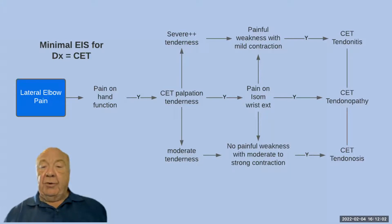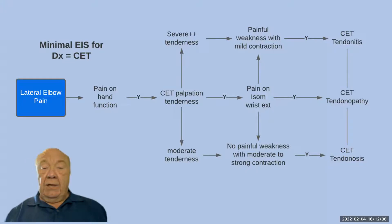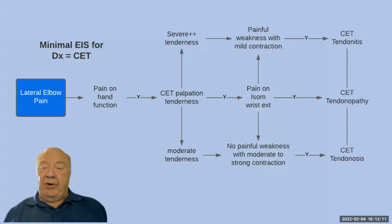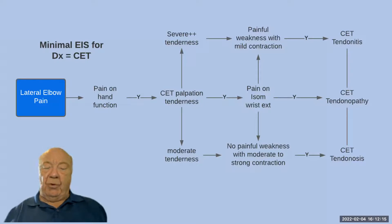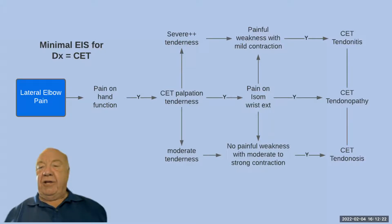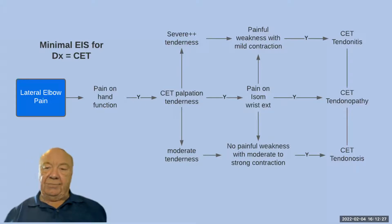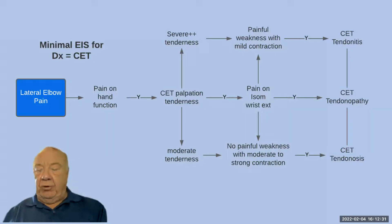If that's positive, then we can palpate the tendon. You're probably better off asking about what makes the pain worse rather than just getting into poking at the patient. We palpate the tendon; if there's pain on isometric wrist extension and it's painful, we can say this is almost certainly going to be a tendinopathy. There is an exception to that, but that's pretty much it — nice and straightforward.